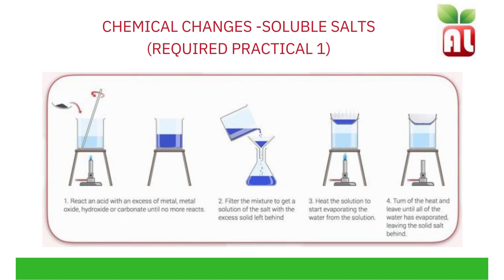Then we want to filter this mixture through a filter funnel using filter paper and a conical flask. Collect the filtrate — the solution left behind — which should just be your copper sulfate solution, as you will have removed any unreacted base. Heat the solution to start evaporating the water: use a Bunsen burner to heat a beaker of water, and place an evaporating basin on top. Add your copper sulfate solution to the evaporating basin and heat until the majority of the water has evaporated off. Turn off the heat and leave to crystallize in a warm, dry place, for example near a window.